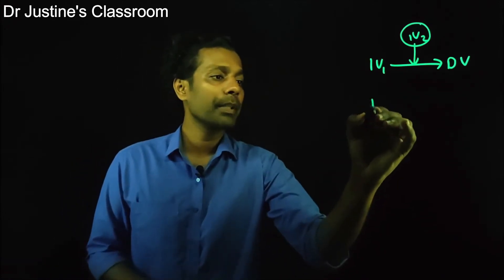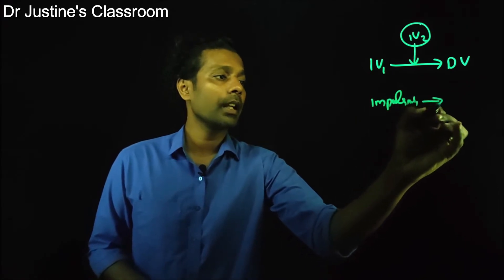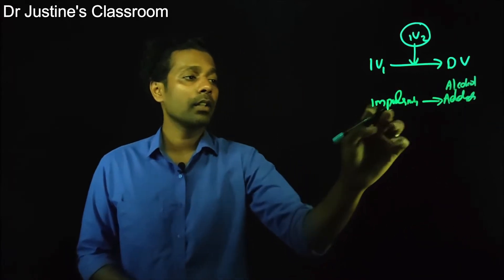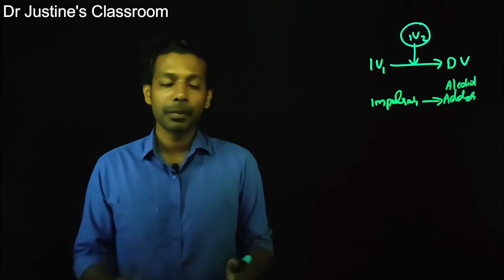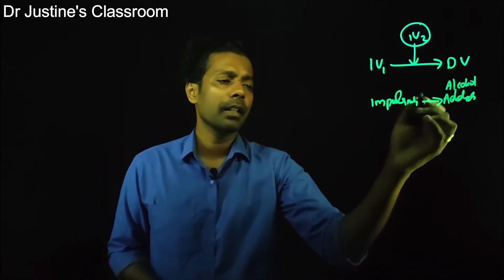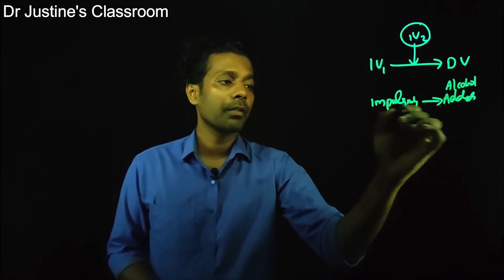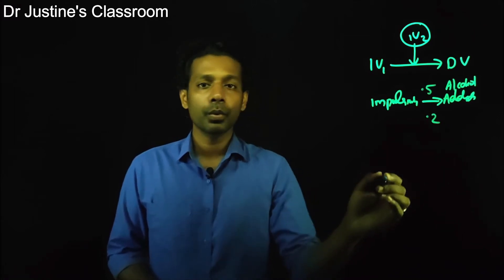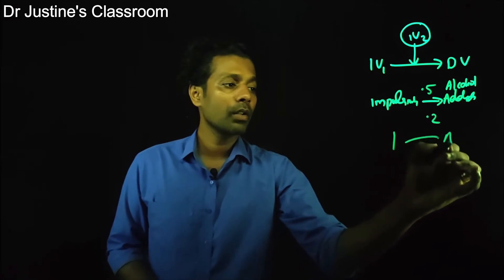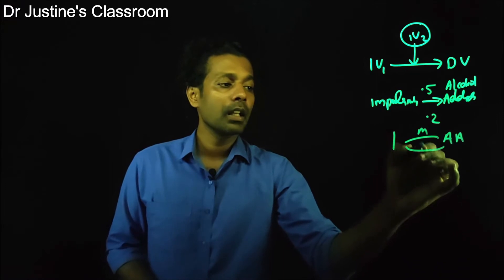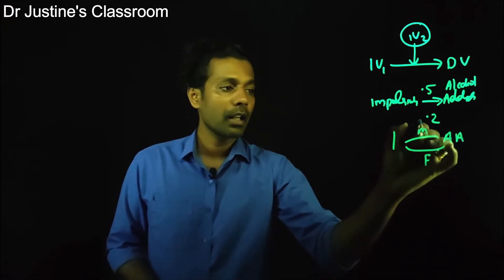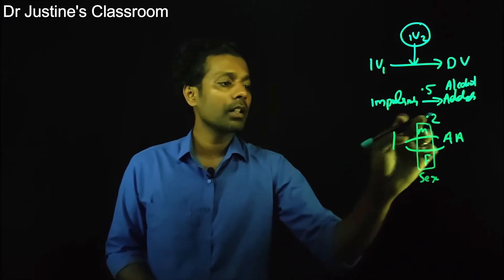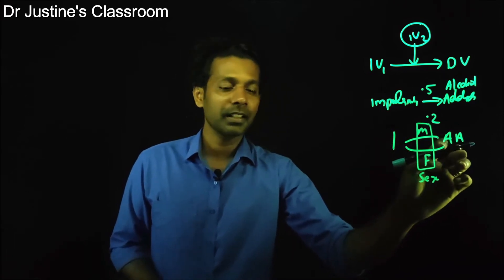For example, I have impulsivity as my independent variable and alcoholic addiction as my dependent variable. When I look at the relationship between these two variables among males, it is found to be 0.5 correlation, and among females it became 0.2. So the effect of impulsivity on alcohol addiction is different for males and females — stronger for males, weaker for females. A variable here, biological sex, influences the relationship between one variable and another. This is called an interaction effect.